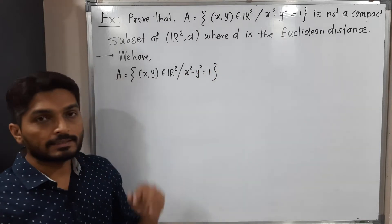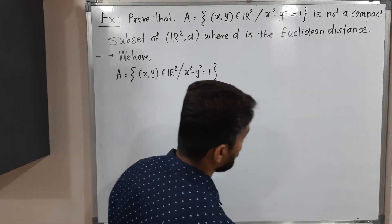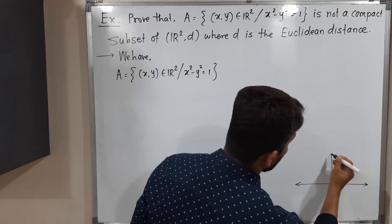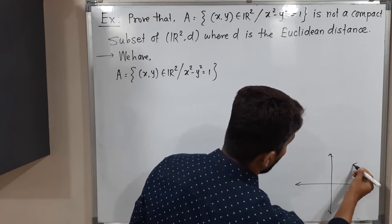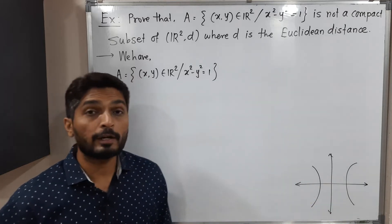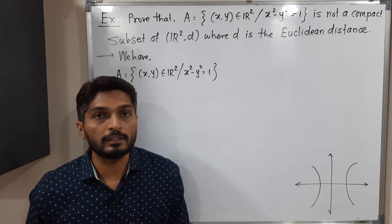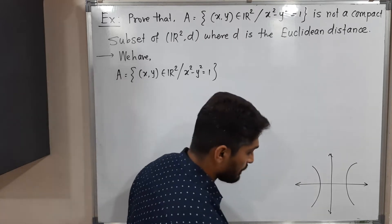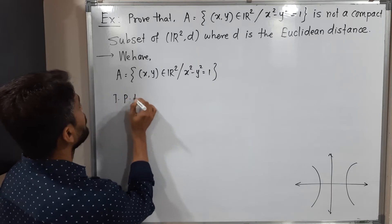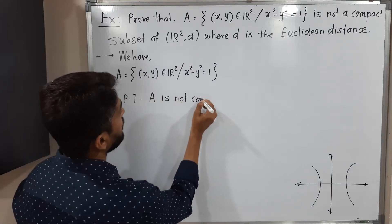We know that this is the equation of a hyperbola. Let me draw the hyperbola. This is the x-axis, this one is the y-axis. So we have a hyperbola of this type. This hyperbola we have, and we have to prove that it is not a compact subset of R2, obviously with a Euclidean distance. So let me write here: to prove that A is not compact.